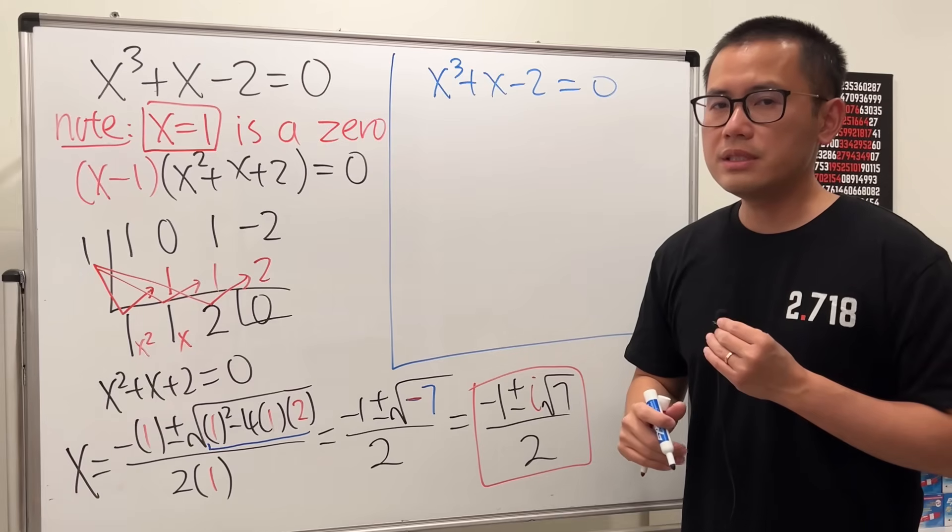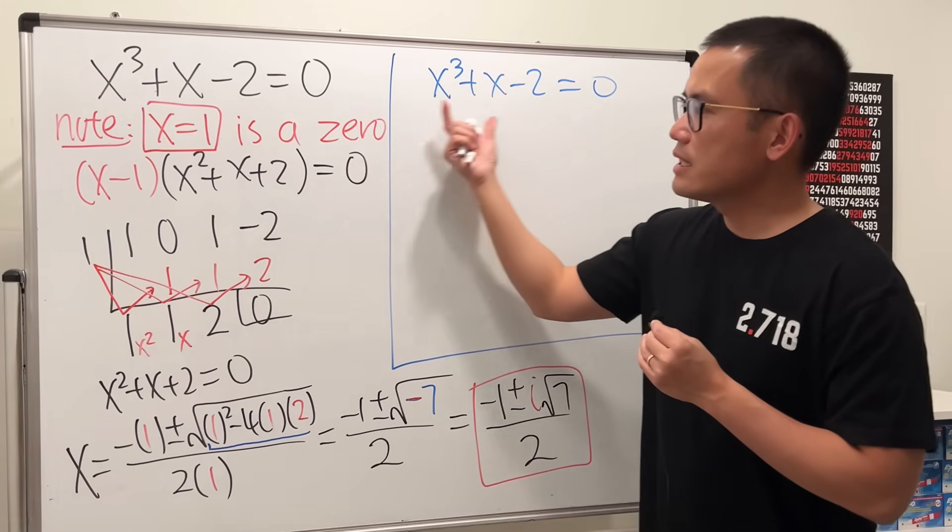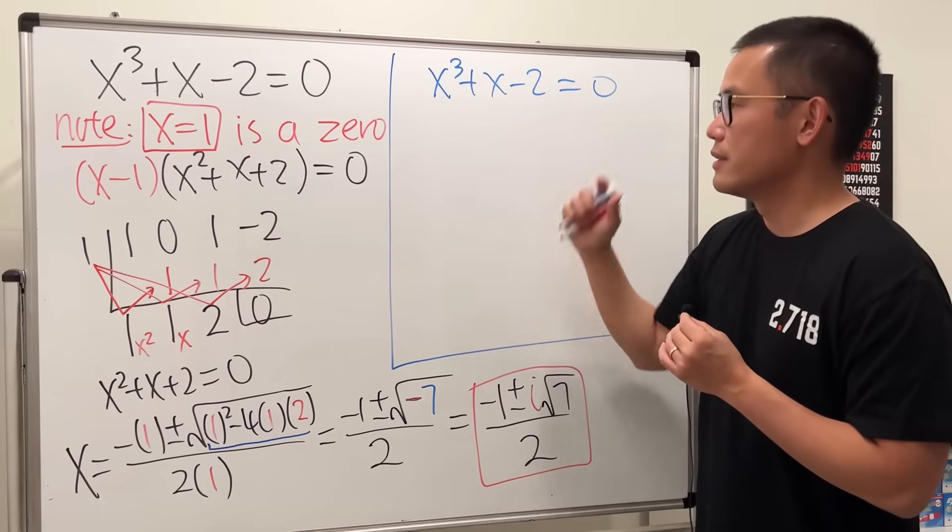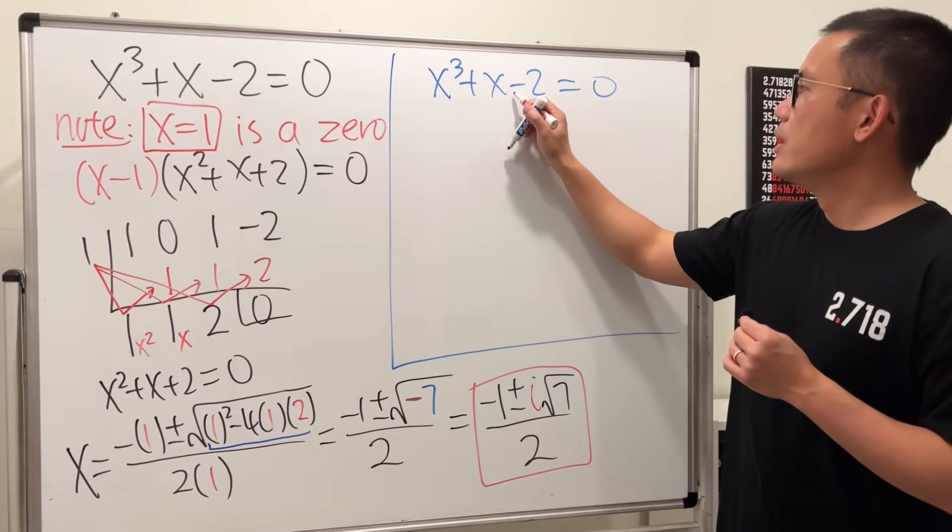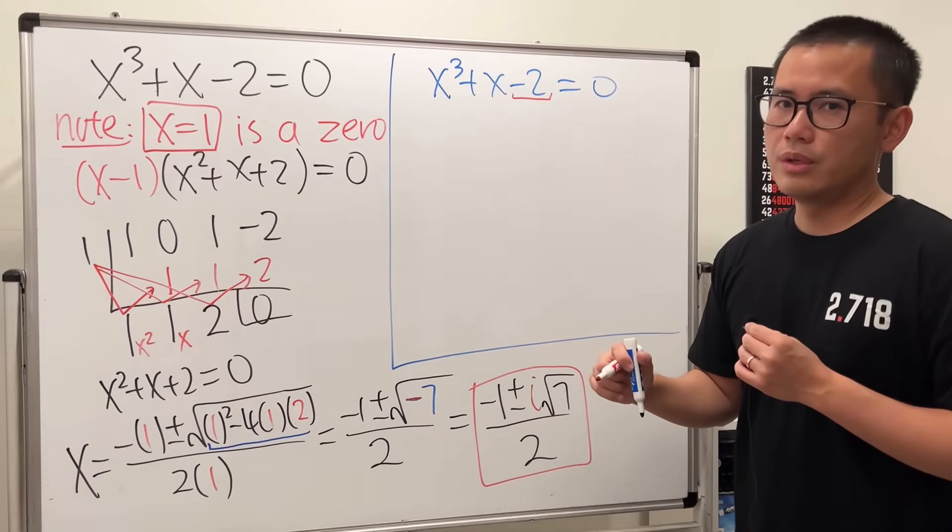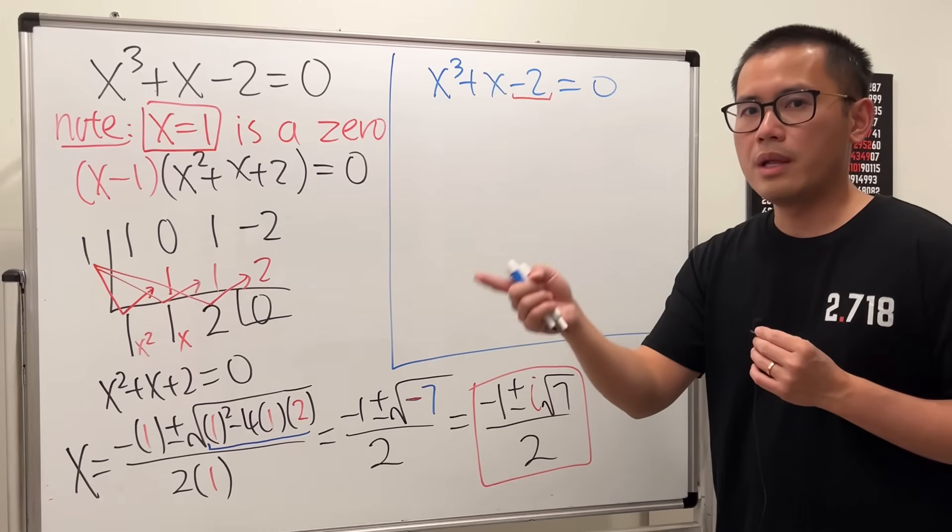That means we must have x minus 1 somewhere right in the factor. How are we going to get that though? Check this out. Notice that we have a minus 2. Utilize this number, break this down as minus 1 minus 1.